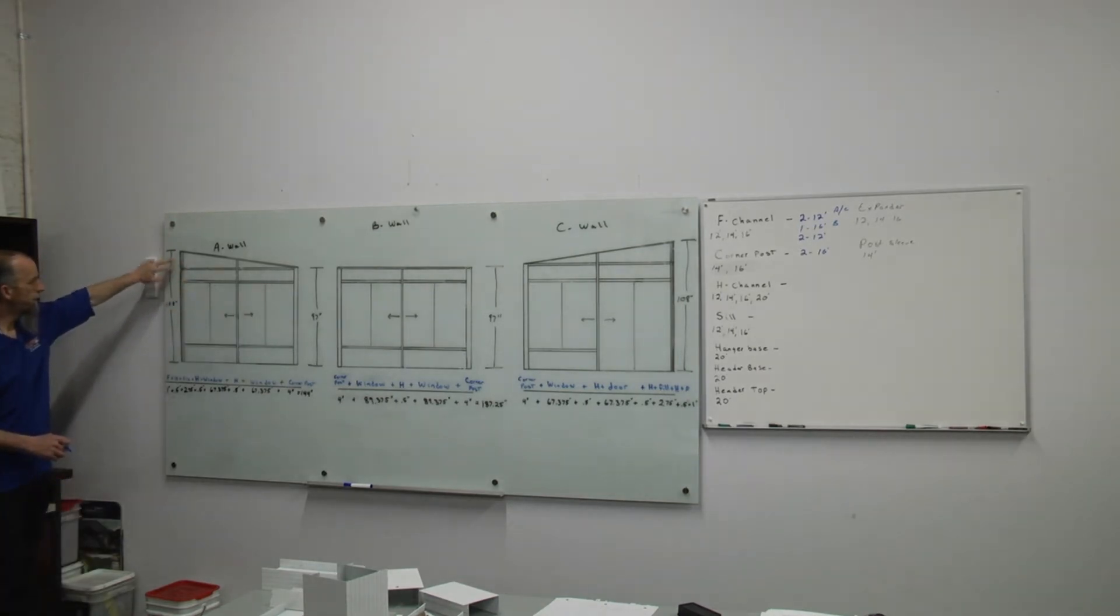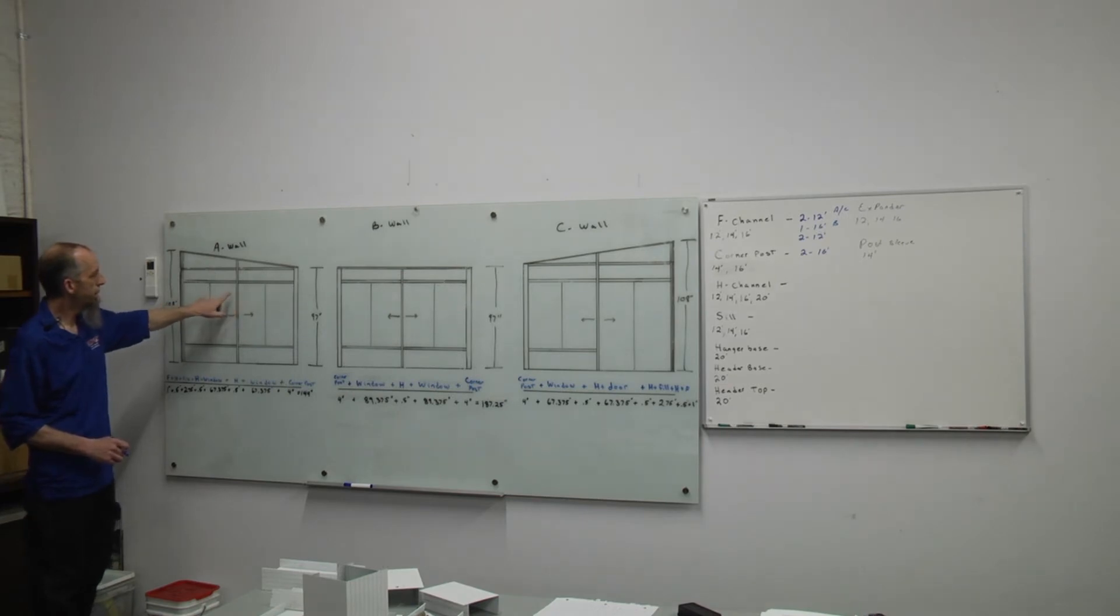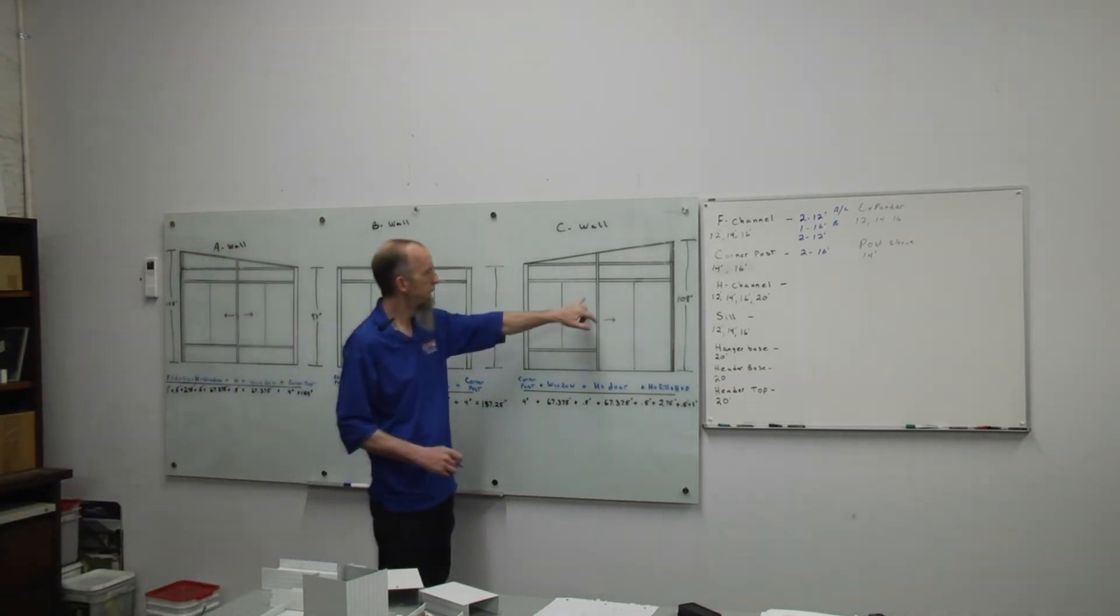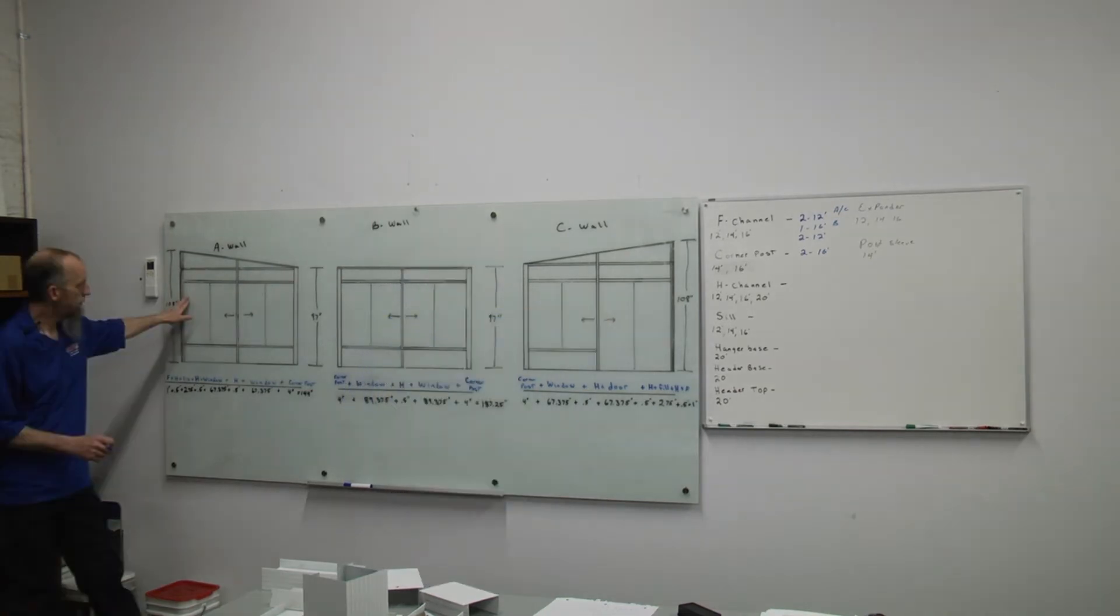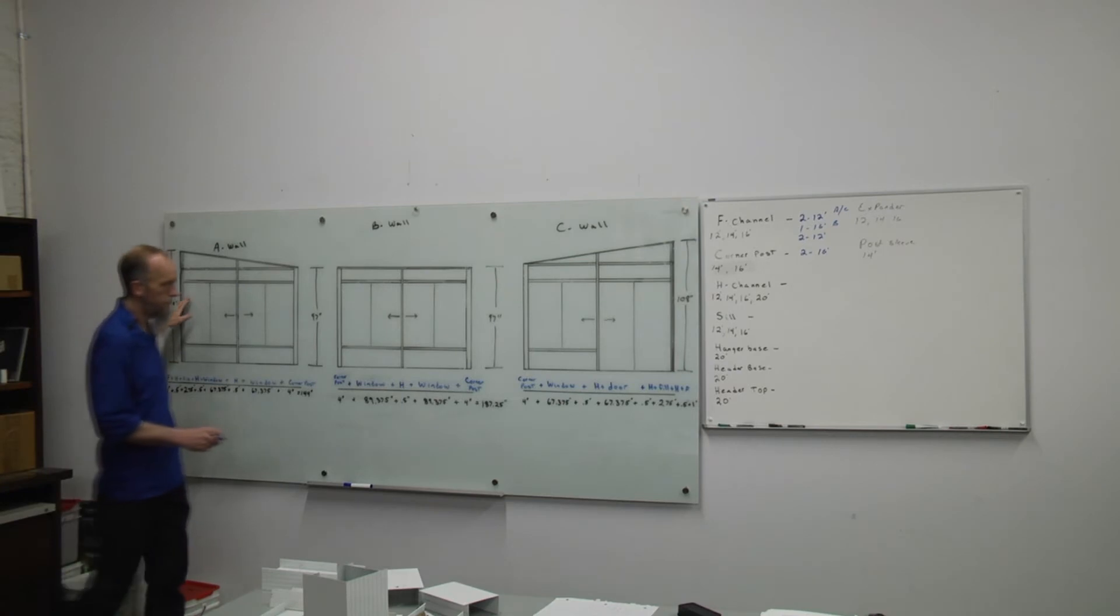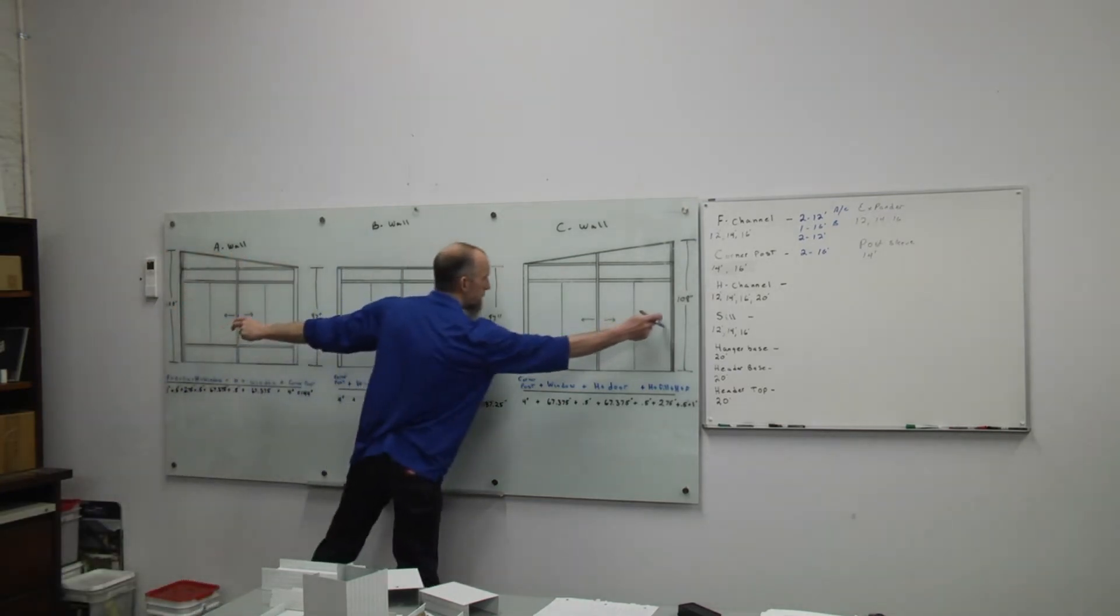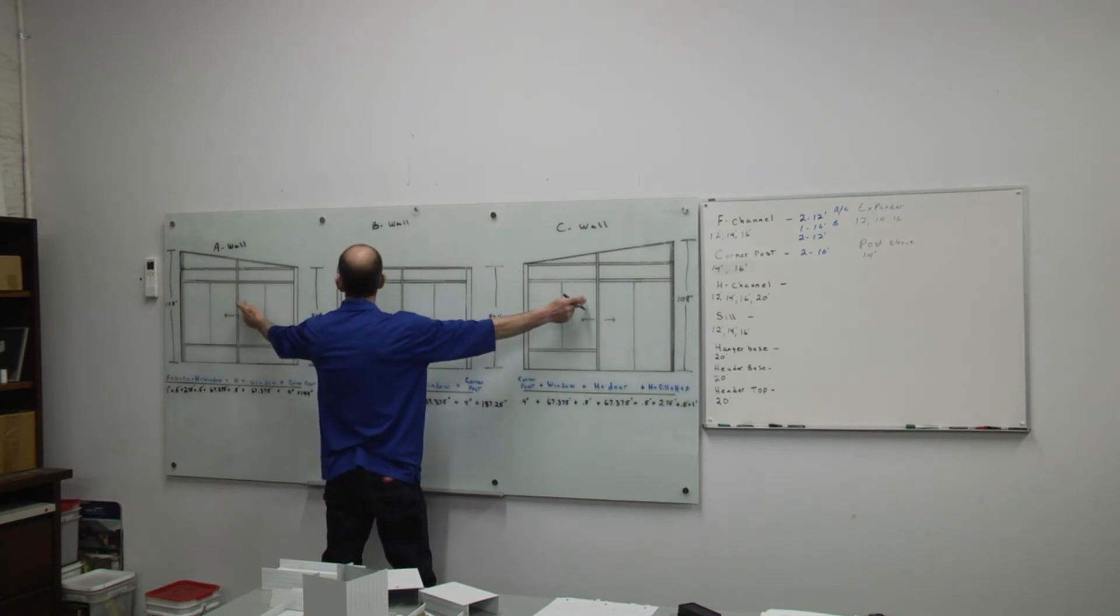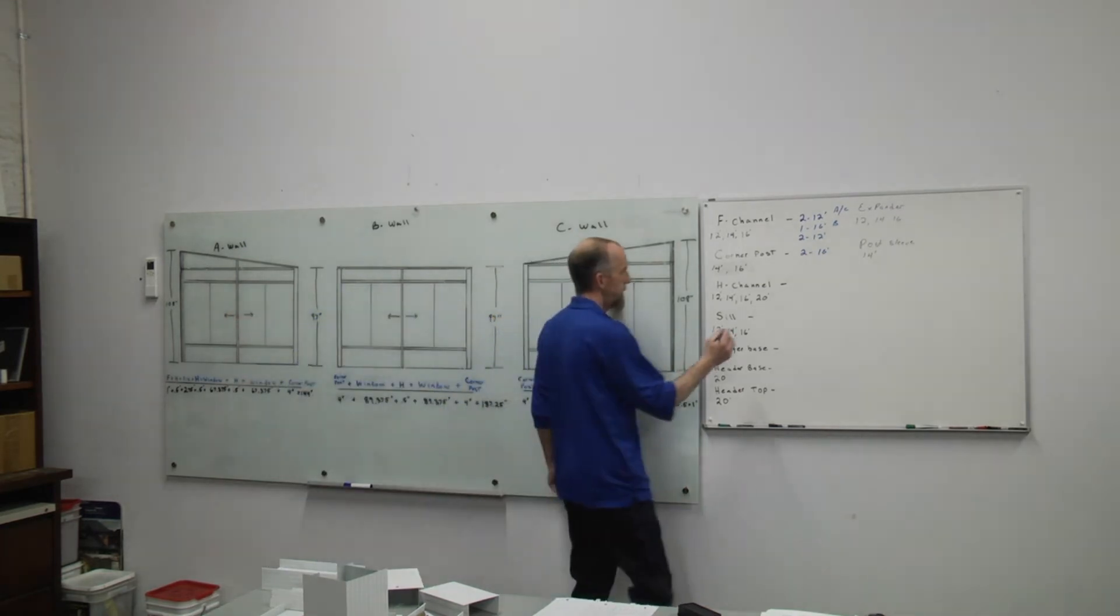One 20 foot H will give us our two pieces at the wall. 20 foot H will give us our mid on our A wall and our mid on our C wall. One 20 foot for A wall at the house. One 20 foot for C wall at the house. One 20 foot will get our two mids.